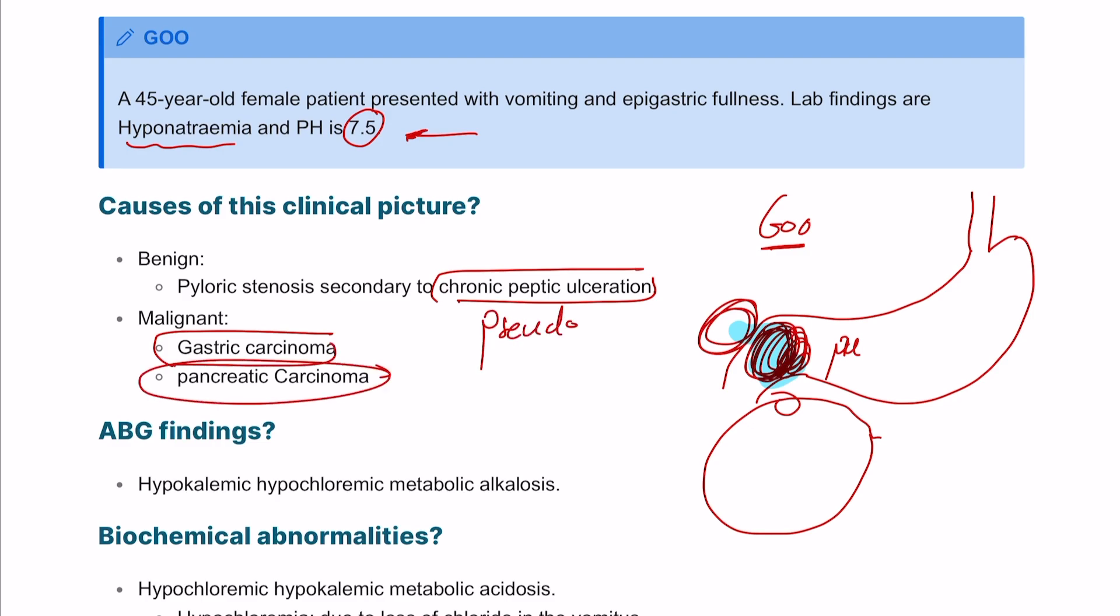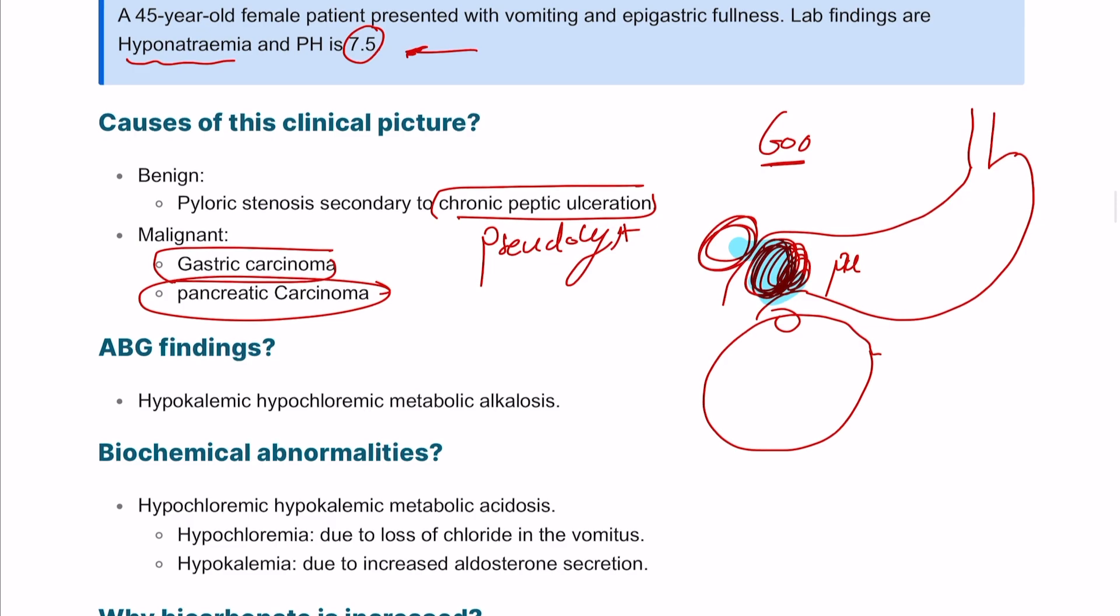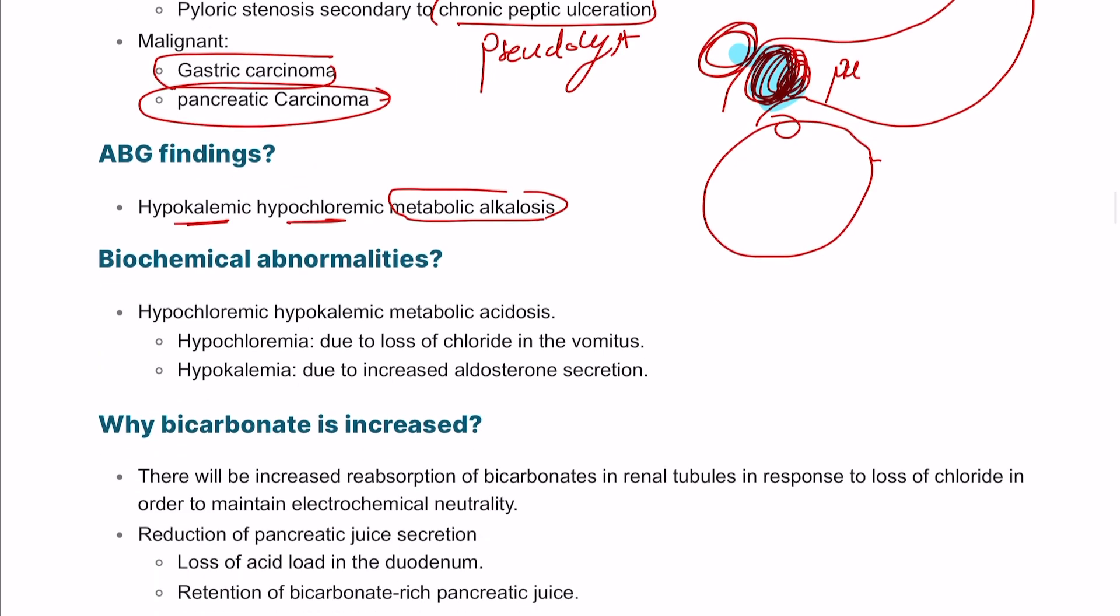The ABG findings show hypochloremic hypokalemic metabolic alkalosis. The biochemical abnormalities in these patients include hypochloremic hypokalemic metabolic alkalosis. Hypochloremia happens due to loss of chloride in vomitus, and hypokalemia happens due to increased aldosterone secretion.